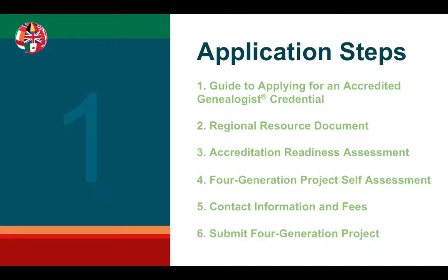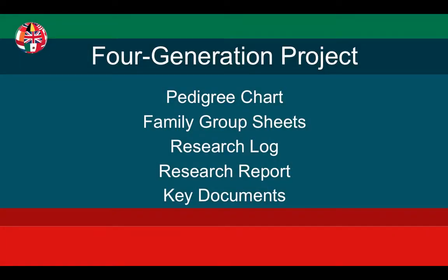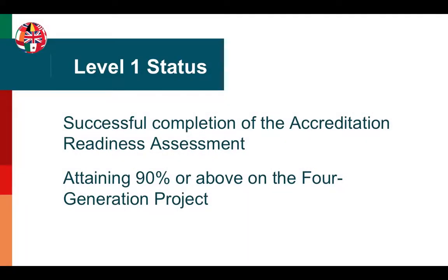Sixth, submit your four-generation project. The four-generation project includes a pedigree chart showing only the four generations researched, and family group sheets — there should be at least four, one for each family in the four generations, but if there are more, such as multiple spouses or more than one family, those should be included as well. You also need to include a research log, your research report, and key documents showing the linkage between generations. Level 1 status is attained after successful completion of the accreditation readiness assessment and attaining 90% or above on the four-generation project.